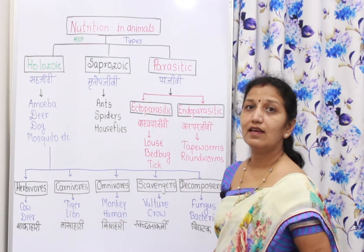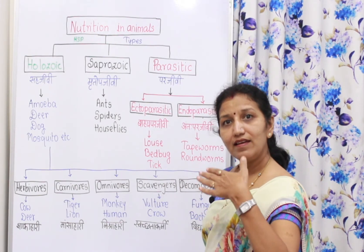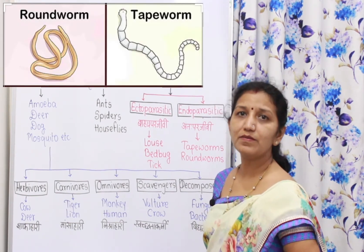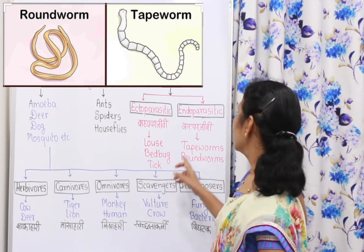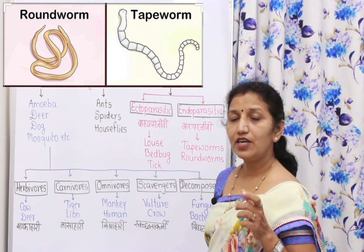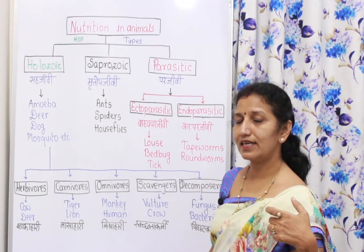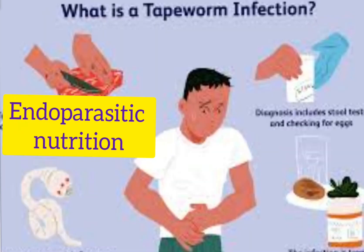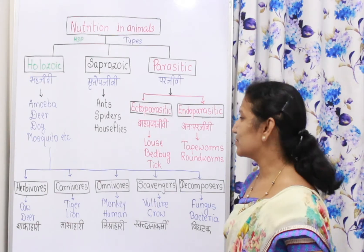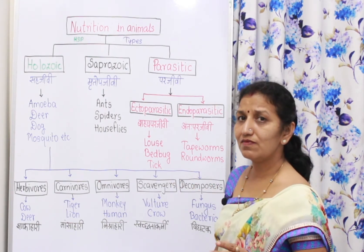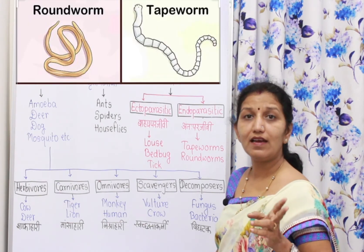Endoparasitic parasites remain inside the body of the host and cause harm to that host. For example, tapeworms and roundworms. Ecto means outside and endo means inside. These tapeworms are found in the intestine or digestive system of the animal, and these worms are generally found in children.